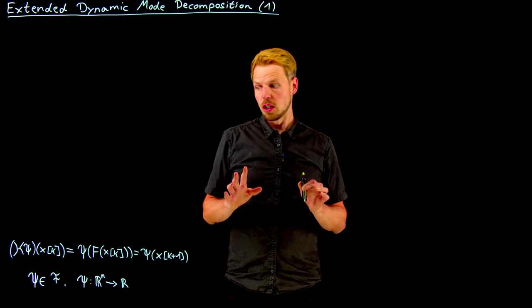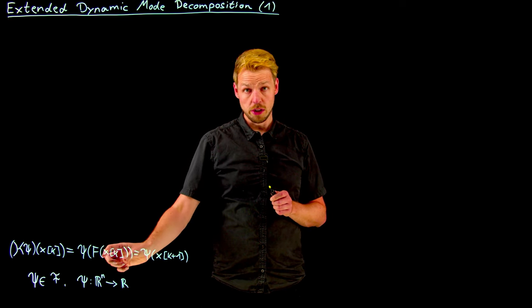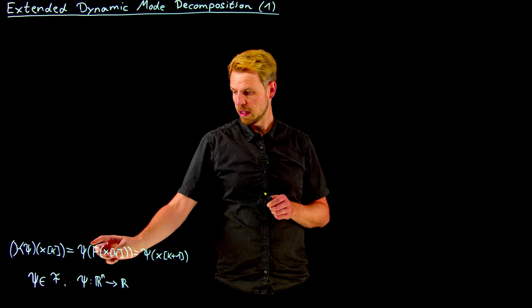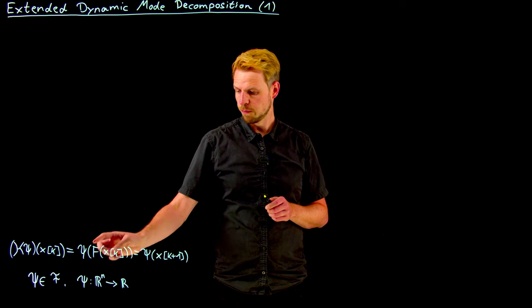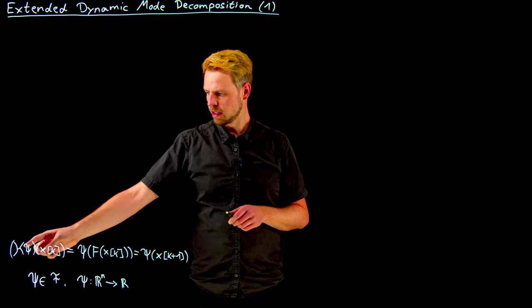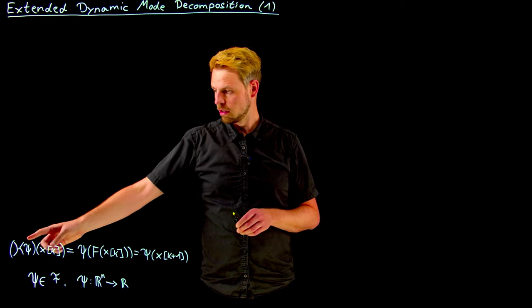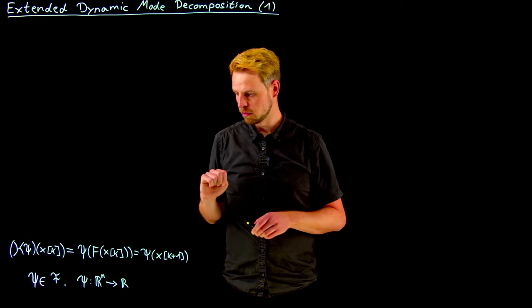What we have seen until now was always the case where we have a nonlinear system where we map forward in time the state x_k by a nonlinear flow map which gives us x_k+1. The Koopman operator is now the linear operator that does not act on the state space but acts on the space of these observable functions.